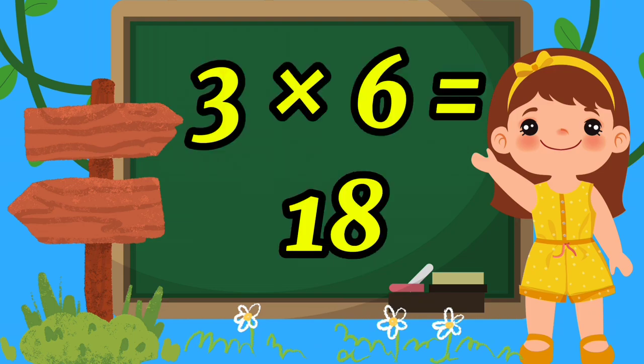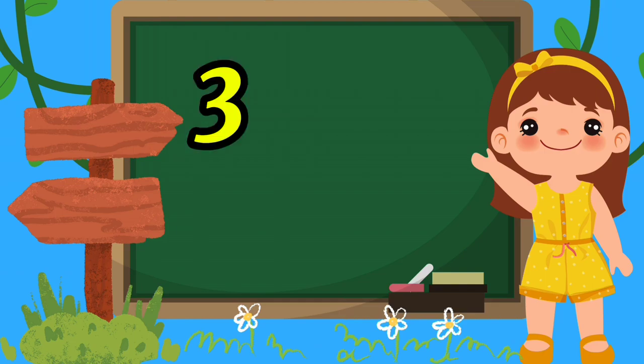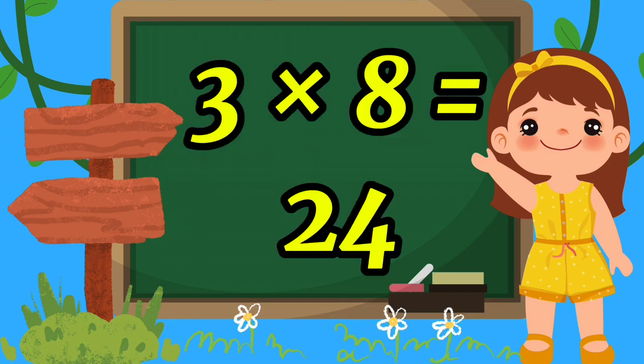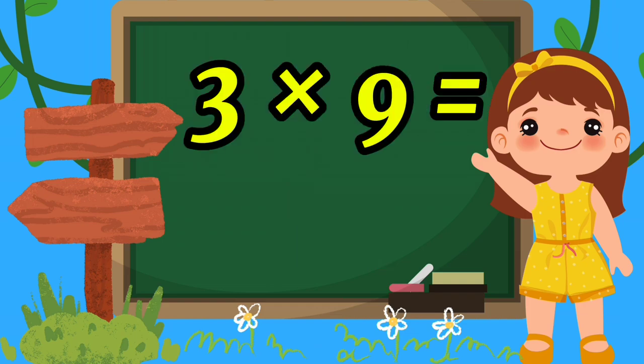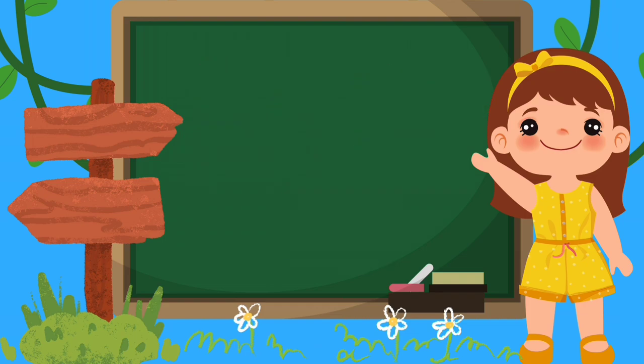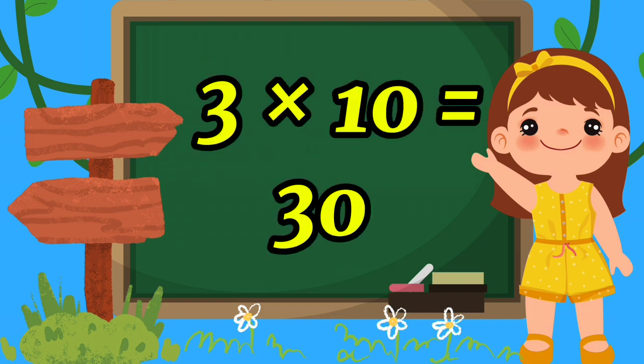Three six equals eighteen. Three seven equals twenty-one. Three eight equals twenty-four. Three nine equals twenty-seven. Three ten equals thirty.